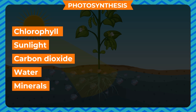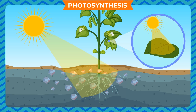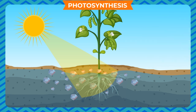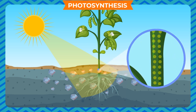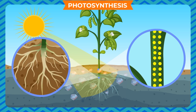Chlorophyll, sunlight, carbon dioxide, water, and minerals are all necessary to carry out photosynthesis. It is a unique process on Earth. The solar energy is captured by the leaves and stored in the plant in the form of food, making the Sun the ultimate source of energy for all living organisms. The food synthesized by the green leaves is transported to the other parts of the plant by the stem.